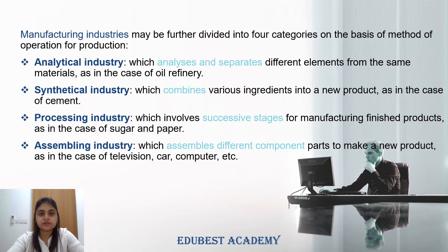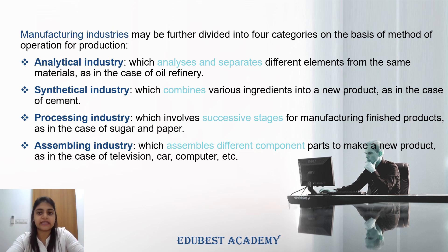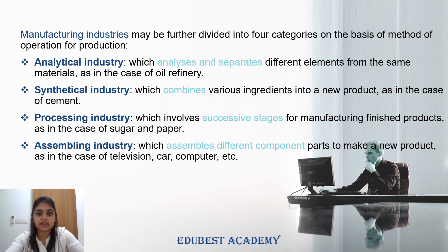Manufacturing industries are further divided into four parts: analytical industry, synthetical industry, processing industry, and assembling industry. Analytical industries are those which analyze and separate different elements from the same material. For example, in an oil refinery, oil is one same material which has many different elements mixed in it. The refinery employees analyze those different elements and separate them, because from one oil, many things come out — be it petrol, be it diesel, or anything else.